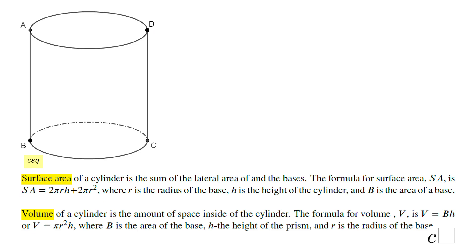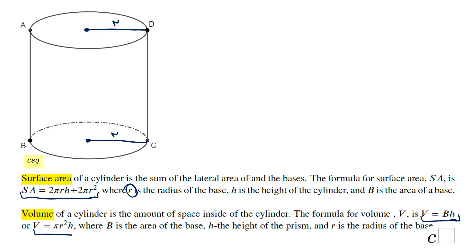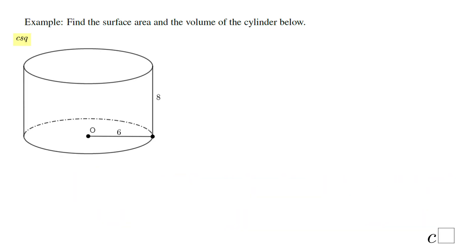We can move to the surface area and volume of the cylinder. The surface area formula involves the radius — this is the radius going from the center to the edge — and of course the same from the other base. The volume formula is the same as for a prism: area of the base times the height, but since the base is a circle, we use pi r squared times h.